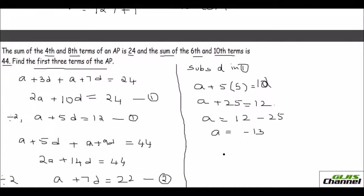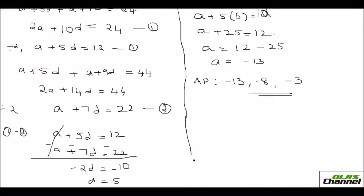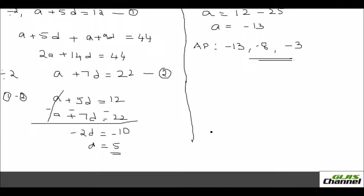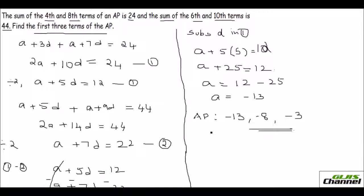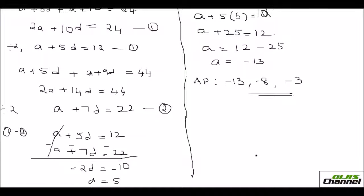So the AP has first term -13 and common difference 5. The first three terms are: -13, -13 + 5 = -8, and -8 + 5 = -3. Hope you all enjoyed this video. Go through the questions — they're all a bit twisted. Read properly, understand, frame the equations correctly, and you can do these problems very well. Take care, bye!